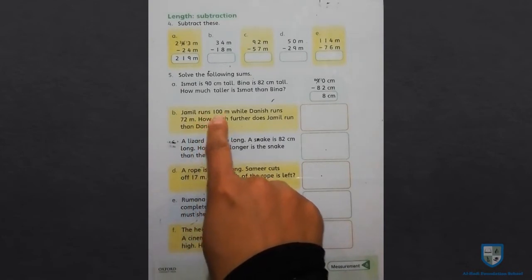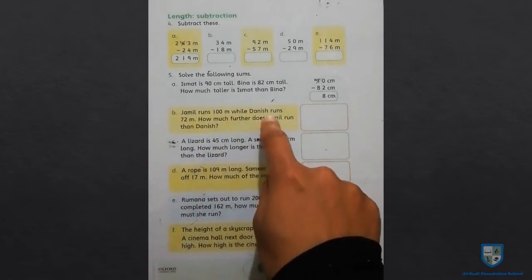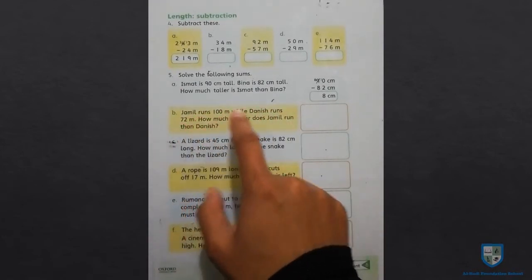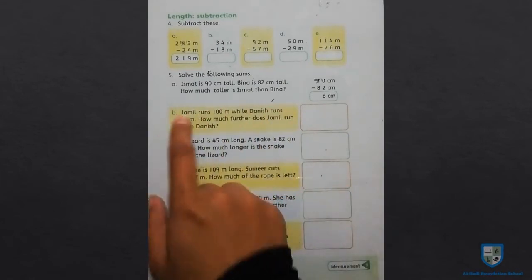Next, Jamil runs 100 m while Danish runs 72 m. How much further does Jamil run than Danish?